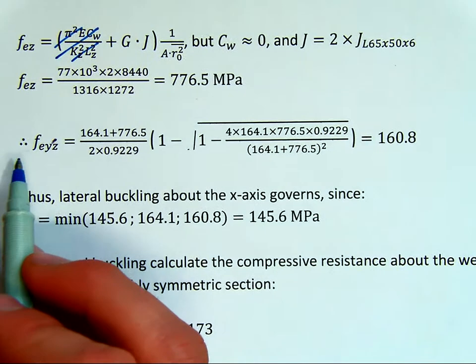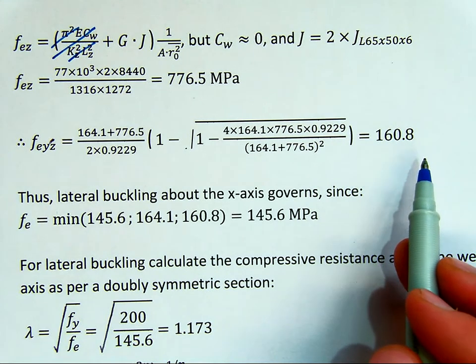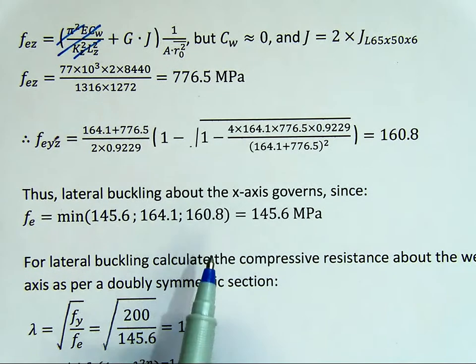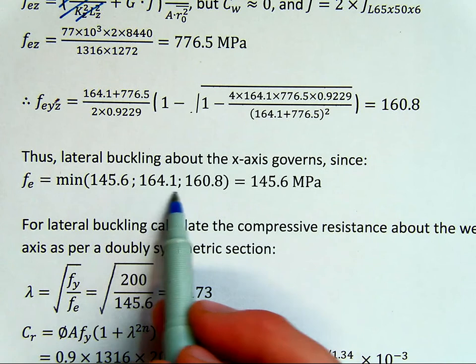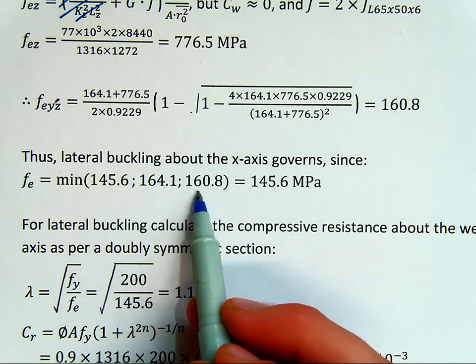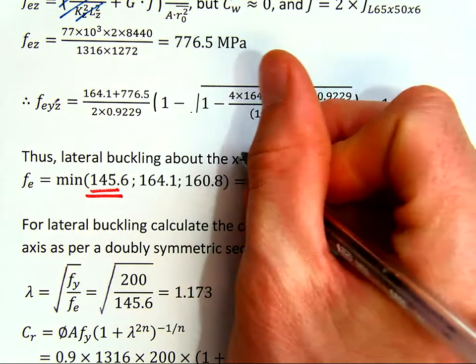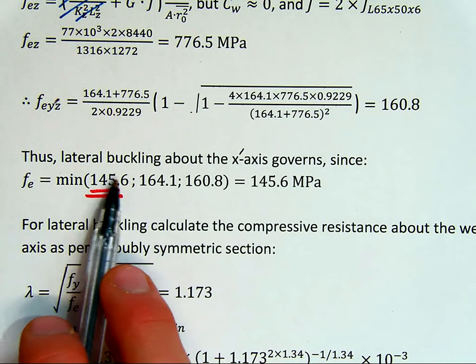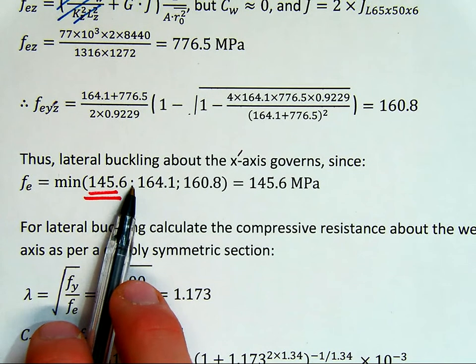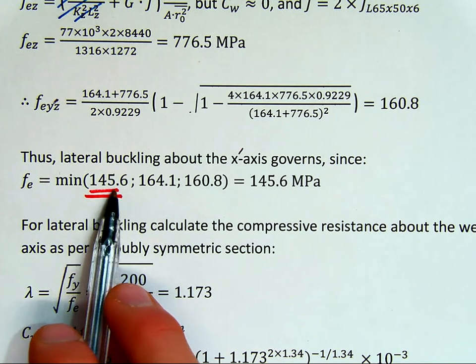We run through, and now we can get our lateral torsional buckling stress, which is 160.8. Thus, lateral buckling about the x-axis governs, since FX equals min(145.6, 164.1, 160.8) = 145.6 MPa. Therefore, if this was a perfect column and we modeled it in Abacus or Prokon or something, our buckling stress would occur at the minimum of our x, y, and z, I mean, FEX, FEY-primed, FEY-primed Z value. We've calculated these three above, and we can see that FEX governs, and it is buckling about our x-primed axis. So this now is what will determine when it will fail. So it will actually fail upwards or downwards, even though the effective length is half, the radius of gyration about that axis is much lower. Therefore, this axis governs.